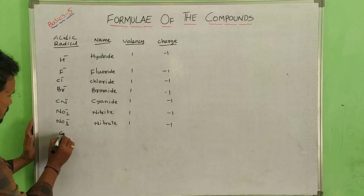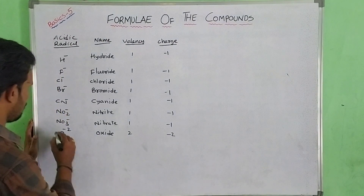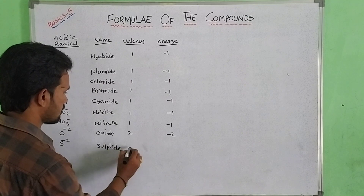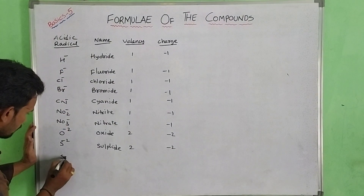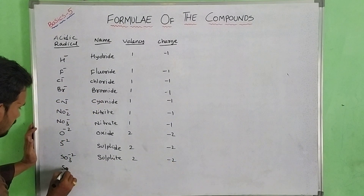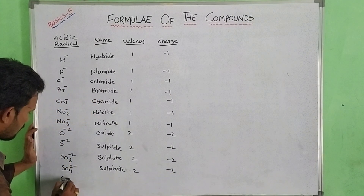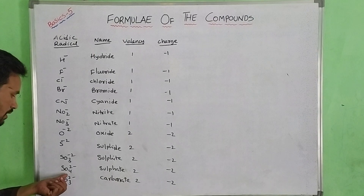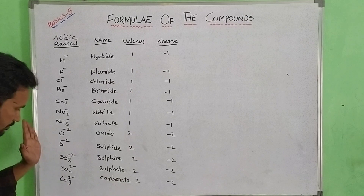Next, oxygen — O 2 minus — this is oxide. Valency 2, charge minus 2. Next is sulfide, S 2 minus — valency 2, charge minus 2. Next is SO₃ 2 minus — sulfite. Next is SO₄ 2 minus — sulfate. Valency 2, charge minus 2. Next is carbonate, CO₃ 2 minus — known as carbonate. Valency 2, charge minus 2.